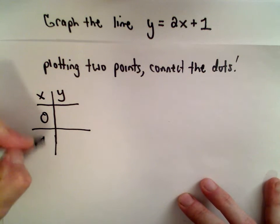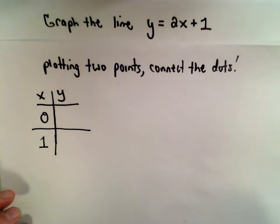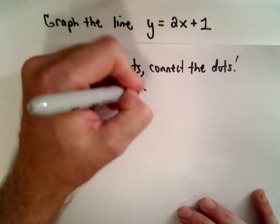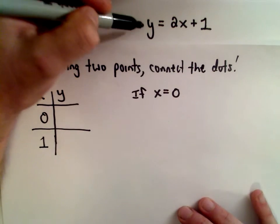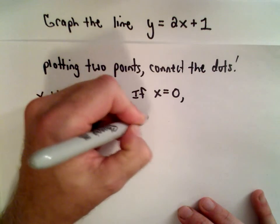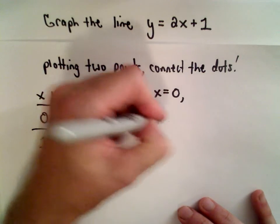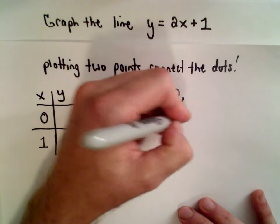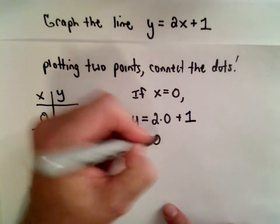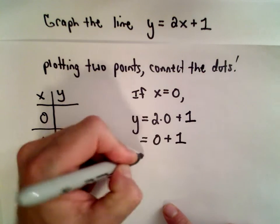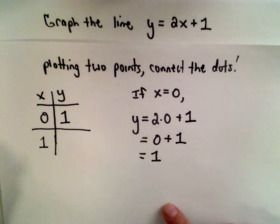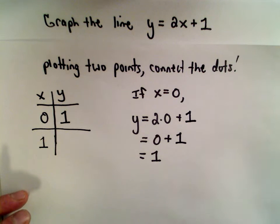If x equals 0, going back to the formula, we have y equals 2 times 0 plus 1. Well, 2 times 0 is 0, so 0 plus 1 gives us 1. So one point on the graph is going to be 0 comma 1.